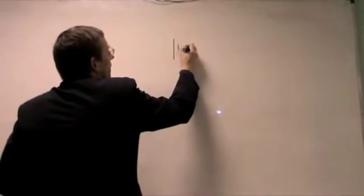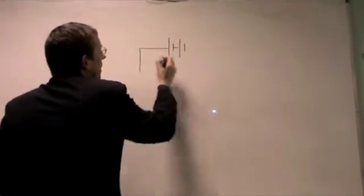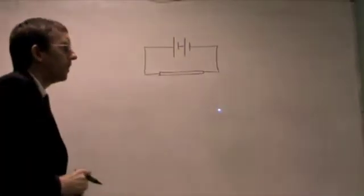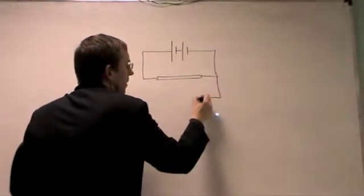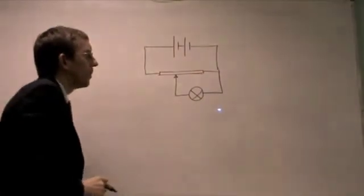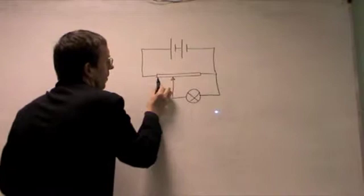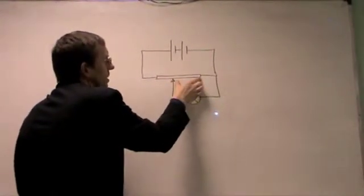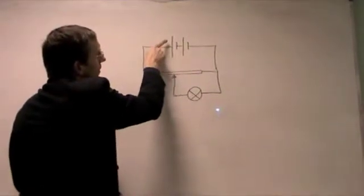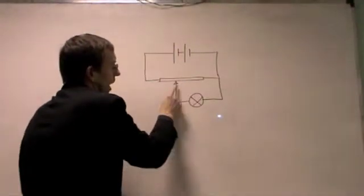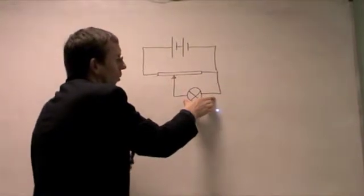The circuit diagram for the potential divider looks like this. Here are the two batteries, connected across the resistance wire. Then there's the bulb and the sliding contact. I've got one resistor on this side and another resistor on the other side. By moving the contact, I'm changing the size of the two resistors in the potential divider. The potential difference provided by the batteries is shared between these two parts of the resistor, and I'm tapping off the portion of potential difference that I need for the light bulb.